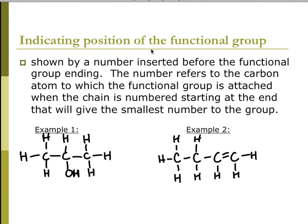To identify the position of functional groups, we show a number inserted before the functional group ending. This number refers to the carbon atom to which the functional group is attached. The chain is numbered starting at the end that will give the smallest number to the group.